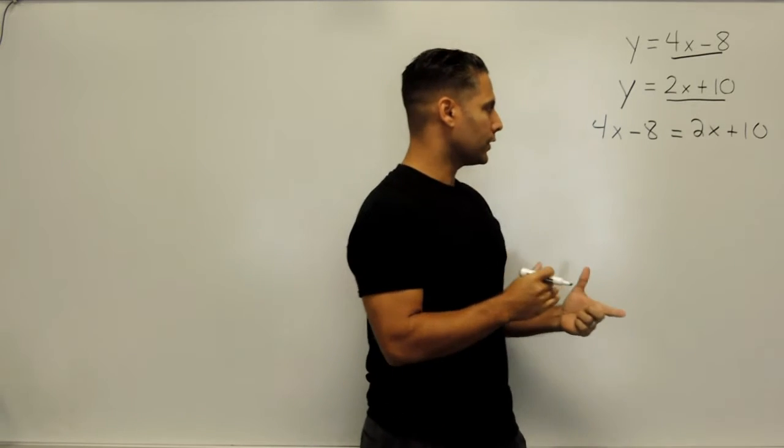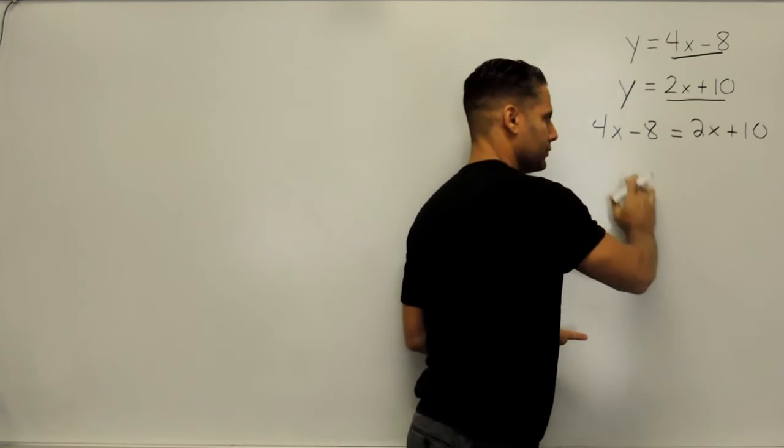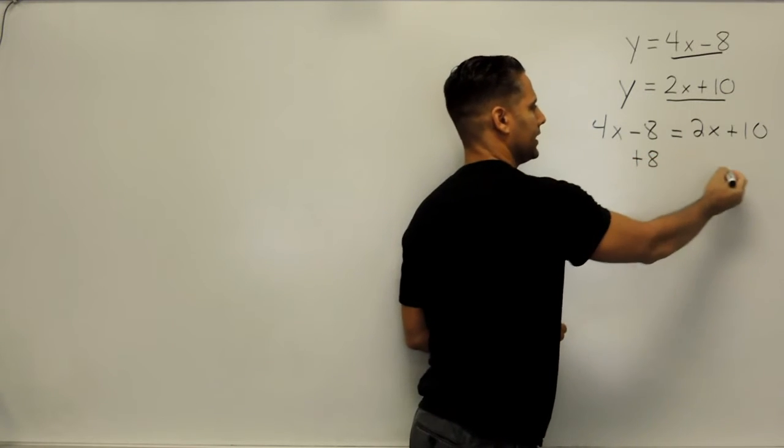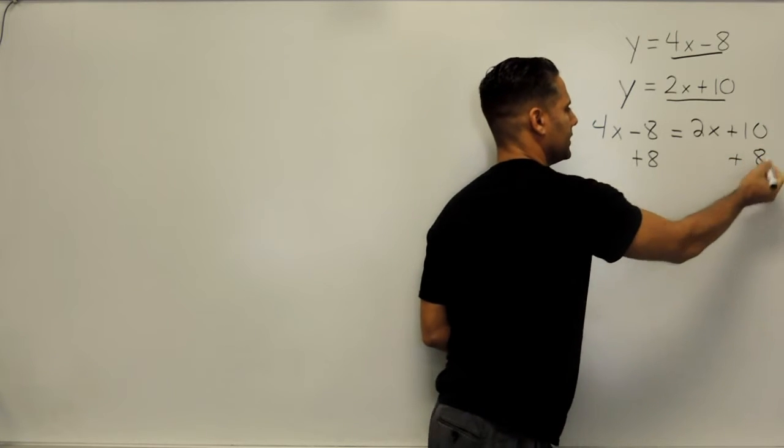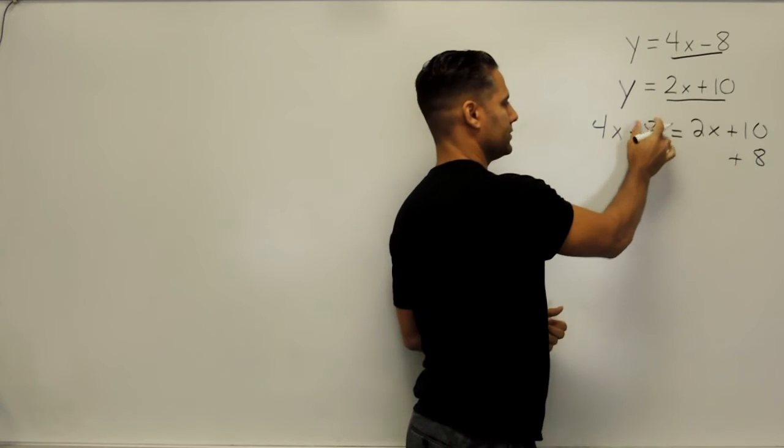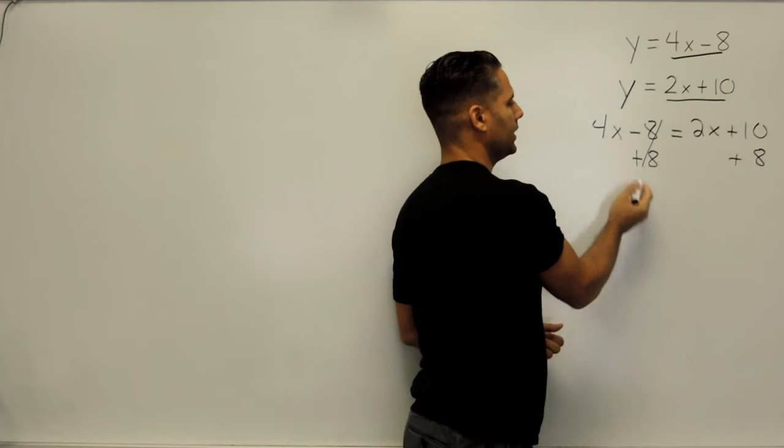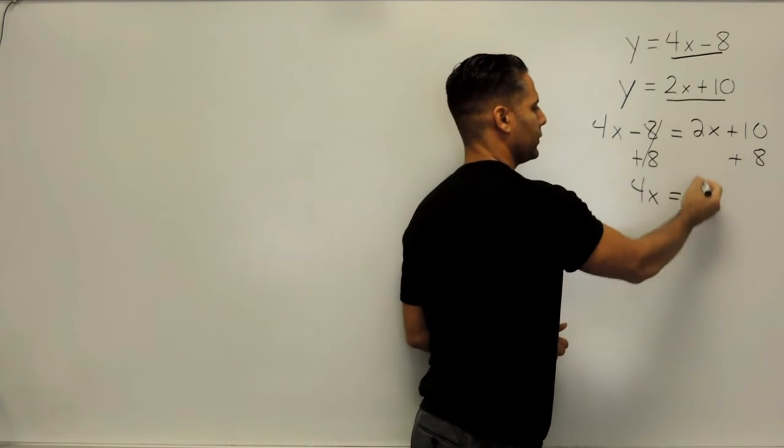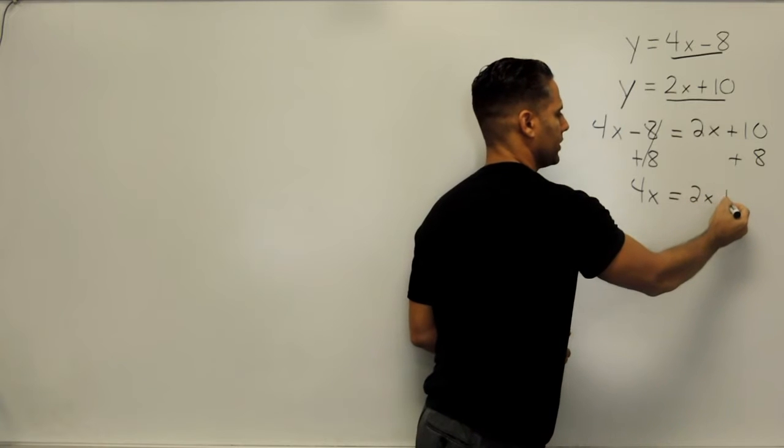So what we want to do first is send this minus 8 to the right-hand side of our equal sign, and we can do that by adding 8 on this side and adding 8 to this side. Adding positive 8 to negative 8 gives us 0, and on the left-hand side that leaves us with 4x, and on the right-hand side we have 2x plus 18.